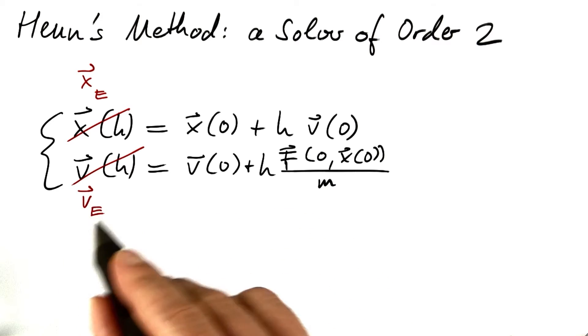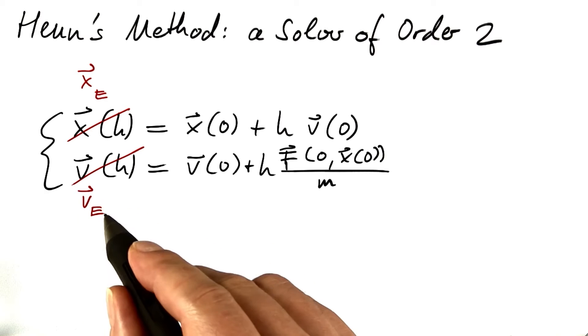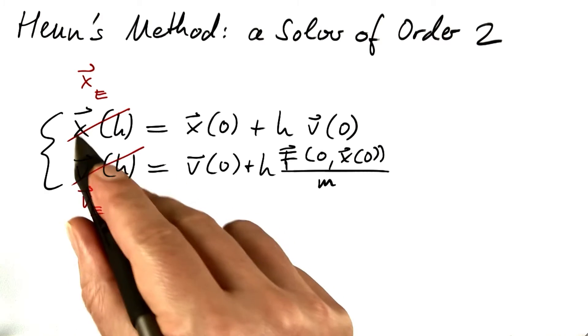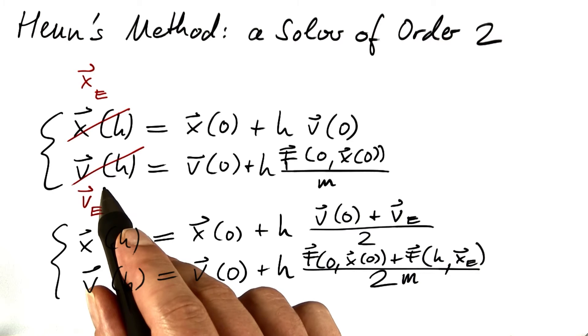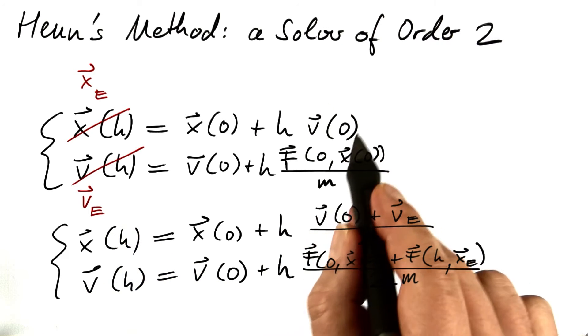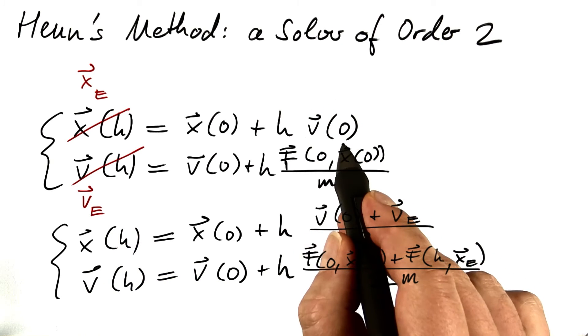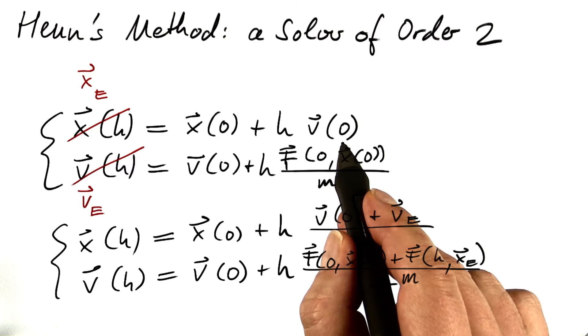And the trick now is to use these intermediate results to get a better estimate for the next x and the next v. So how can I improve the estimate for the next position based on Euler's result? The next position is the initial position plus time step times the average of the initial velocity and the next velocity as predicted by Euler. This takes care of the fact that the velocity is not going to stay constant over the course of the first time step.